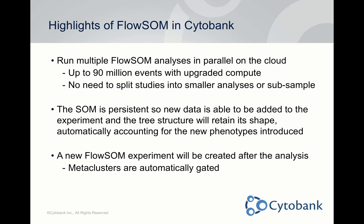In Cytobank you can run multiple FlowSOM analyses in parallel on the cloud — none of the calculations happen on your own computer. This allows you to run up to 90 million events with upgraded compute. You don't need to split studies into smaller subsets or subsample the data. The self-organizing map is persistent, so you can add new data and the tree retains its shape. The generated FlowSOM experiment with meta-clusters can be interacted with in the gating page or working illustration.